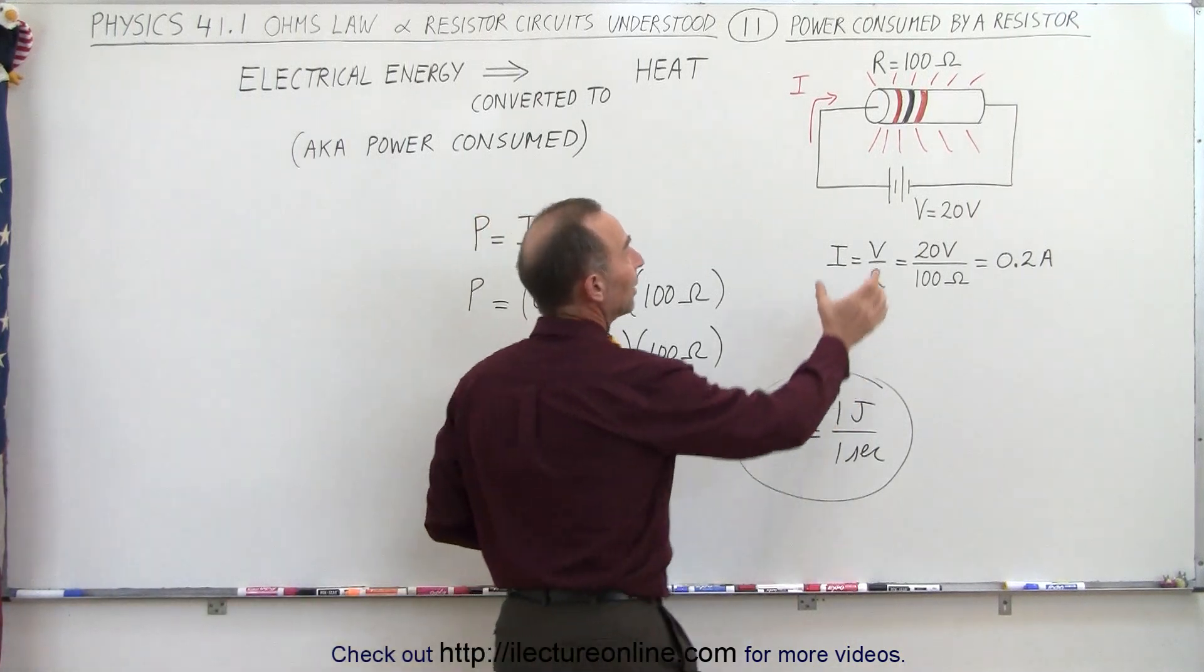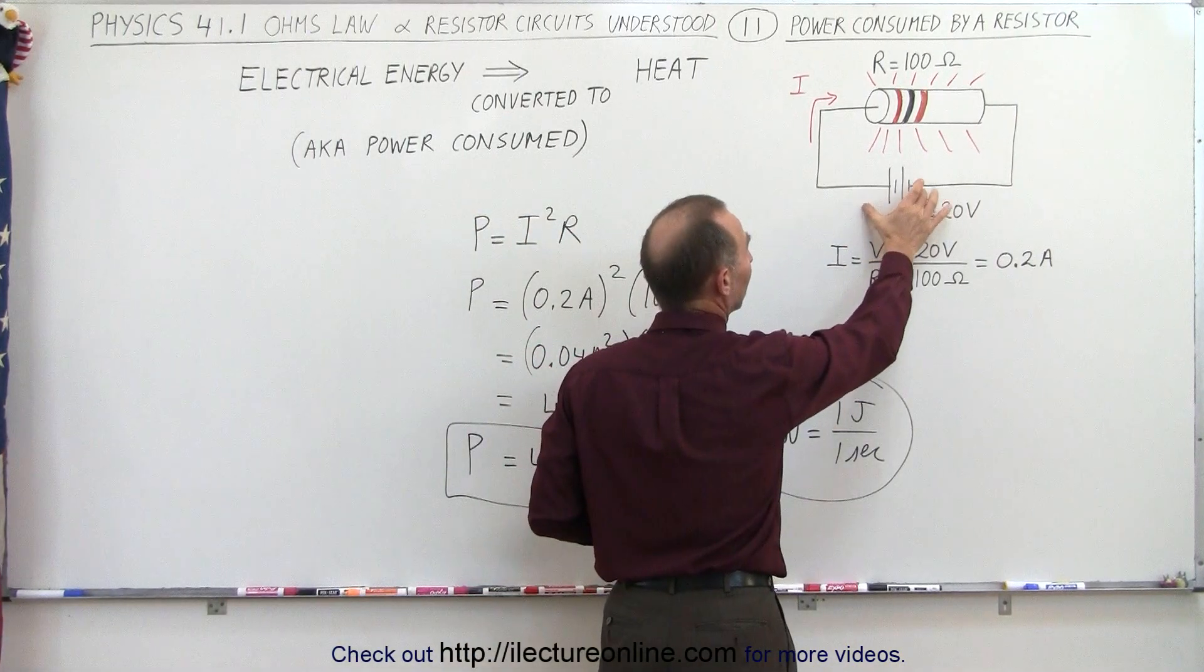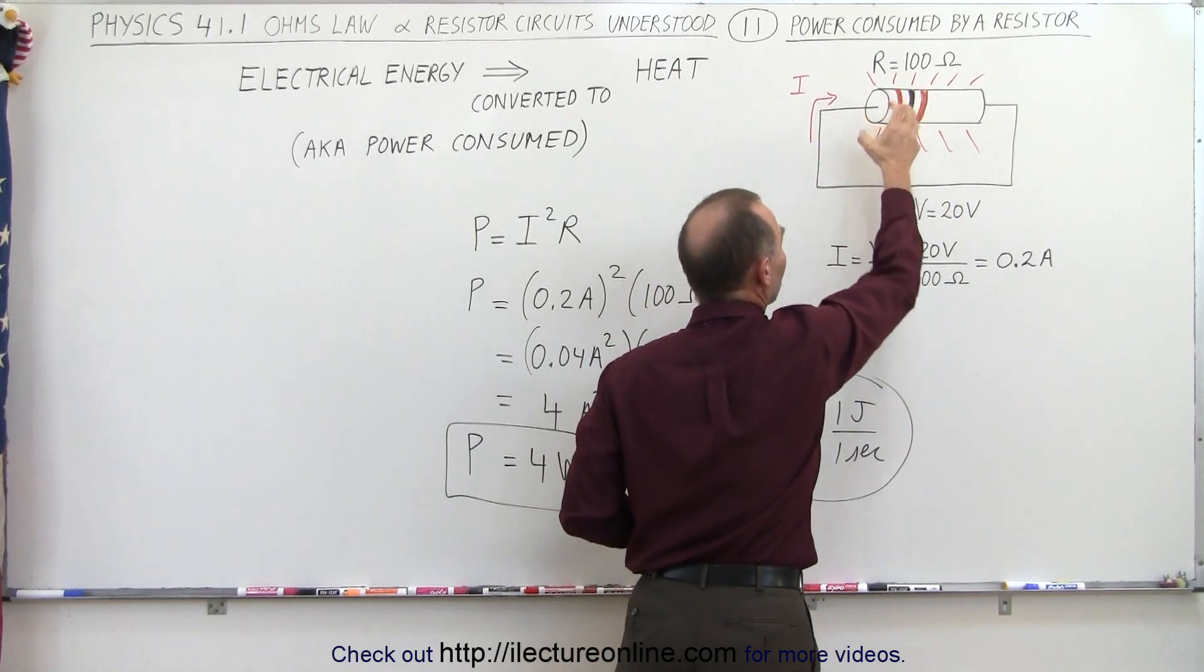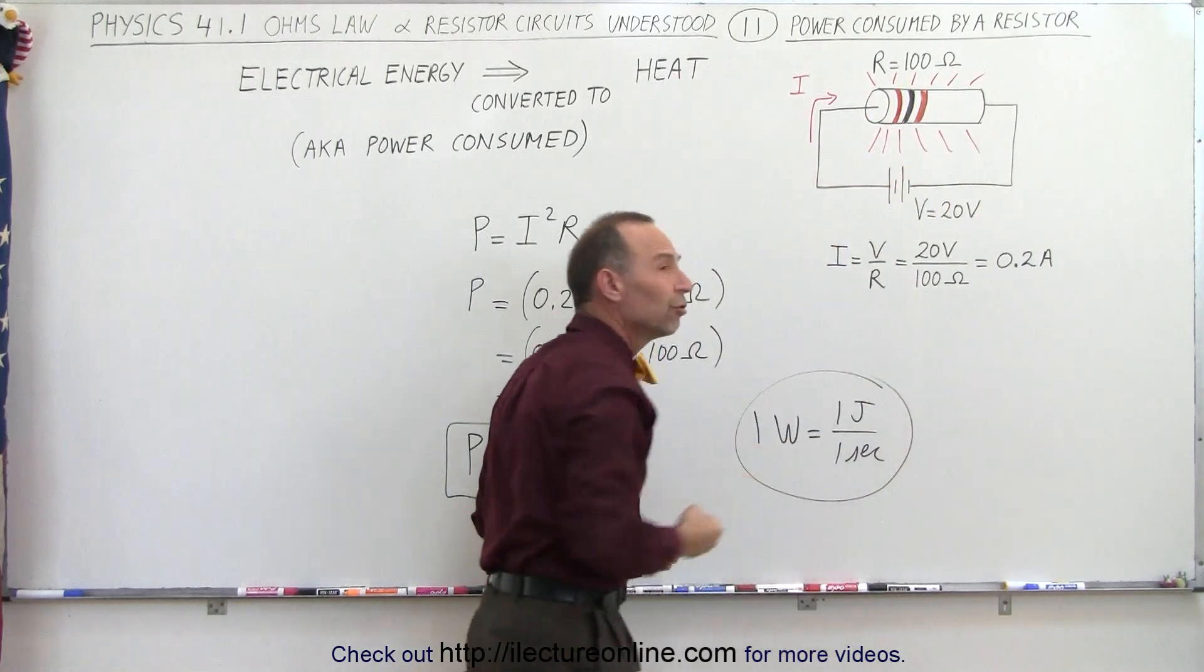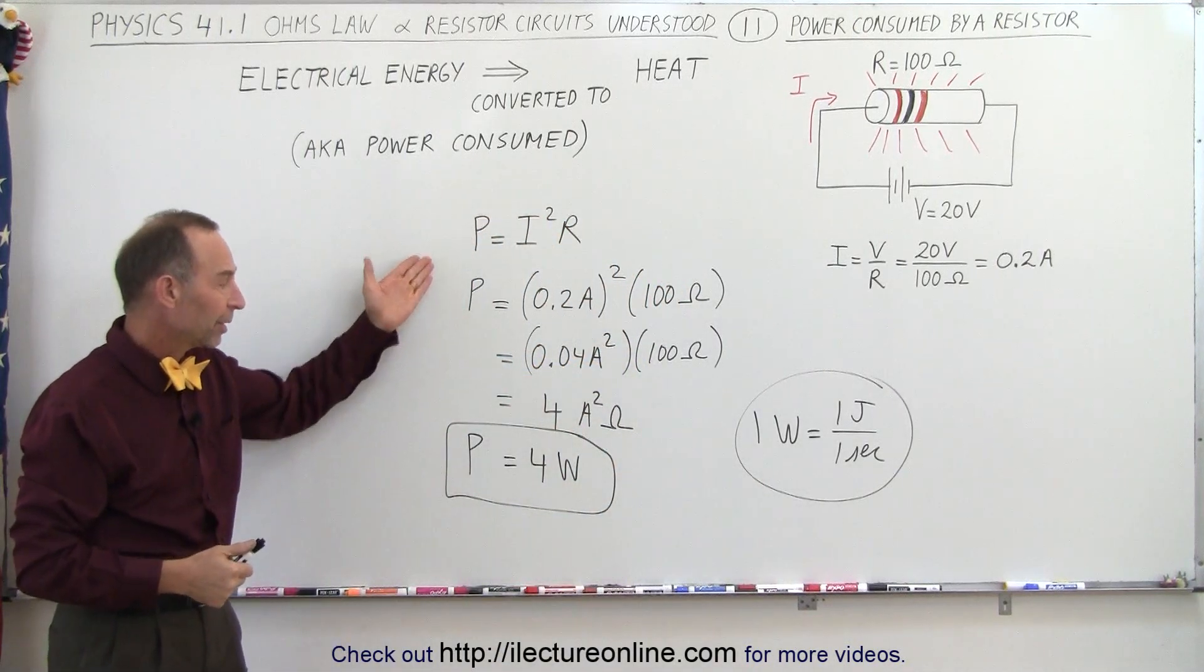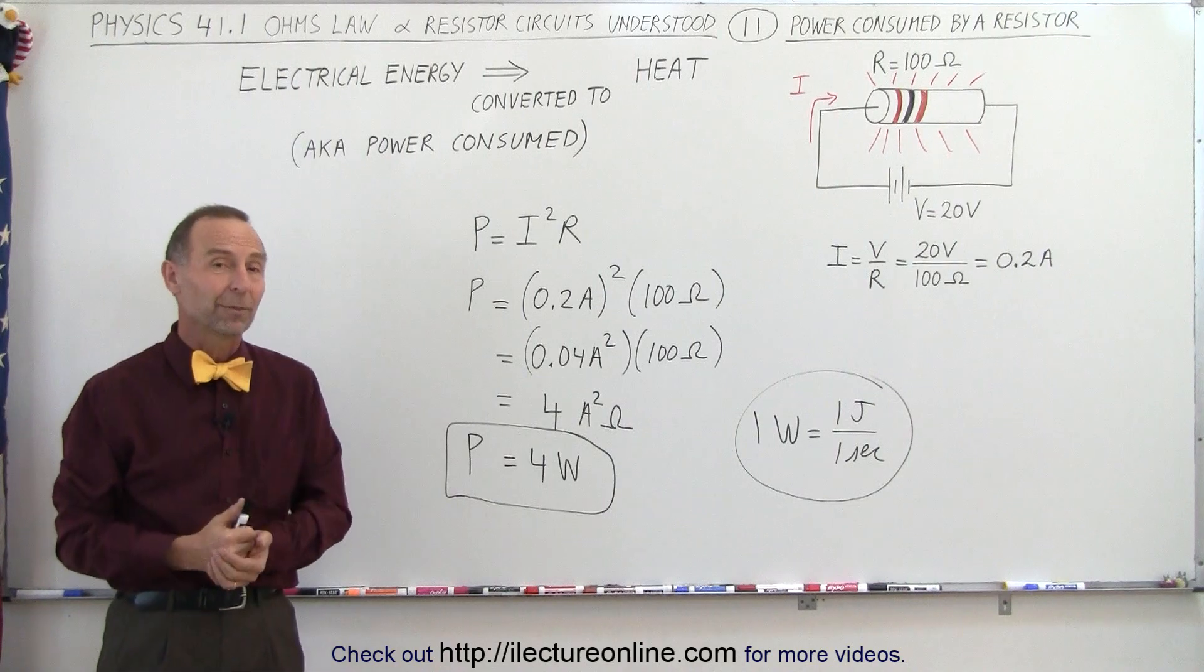Where does the energy come from? It comes from the battery or the power supply. So as the power supply pushes current through the circuit, the resistor will then consume part of that energy from the battery and dissipate it in the form of heat. And that's how we can calculate how much heat is dissipated.